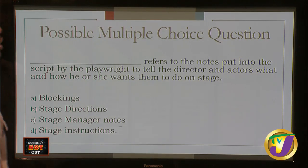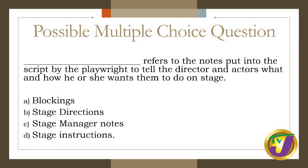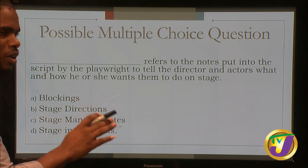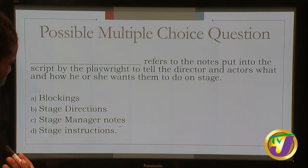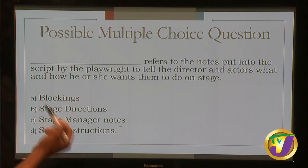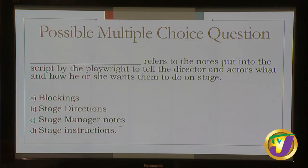Question two: what refers to the notes put into the script by the playwright to tell the director and actors what and how to do something on stage? Options: A: Blockings, B: Stage directions, C: Stage manager notes, D: Stage instructions. Using the elimination method — stage instructions and stage manager notes sound too far off. Blockings relate to movement instructions from the director. The answer is B: Stage directions, because these are specifically notes written in the script by the playwright.